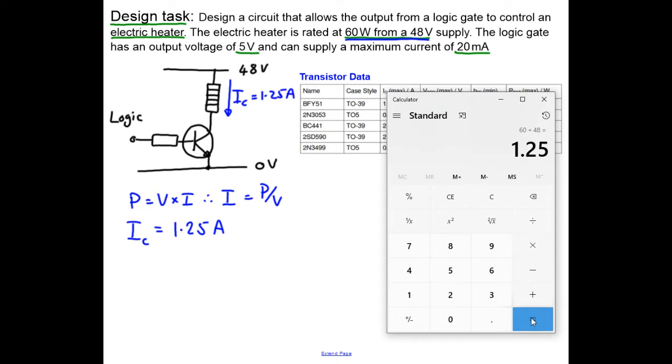Now, we've only got 20 milliamps of current from our logic gate. So the next thing is we can work out the gain of the transistor that we're going to use. So HFE equals IC over IB. Being careful to put them in the same units. So that's 1.25 amps. And 20 milliamps is 0.02 amps. So the gain comes out to be, let's have a look, divided by 0.02. So 63. So what does that actually mean? Well, this is the minimum because that's the maximum current that the logic can provide is 20 milliamps. We need at least 63 as our gain of our transistor.